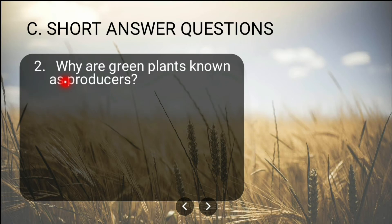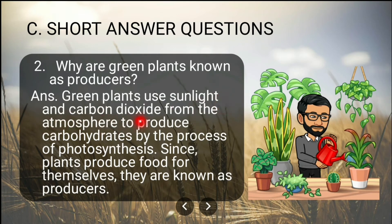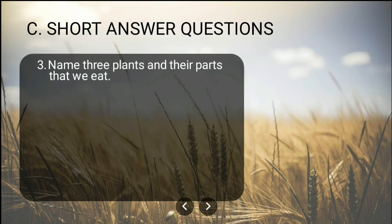Second short answer question: Why are green plants known as producers? Green plants use sunlight and carbon dioxide from the atmosphere to produce carbohydrates by the process of photosynthesis. Since plants produce food for themselves, they are known as producers — they are the only living organisms that can produce their own food.